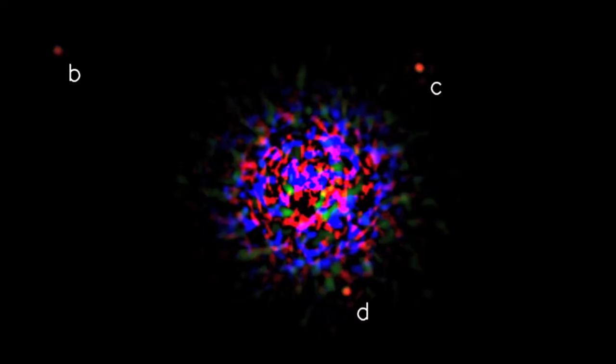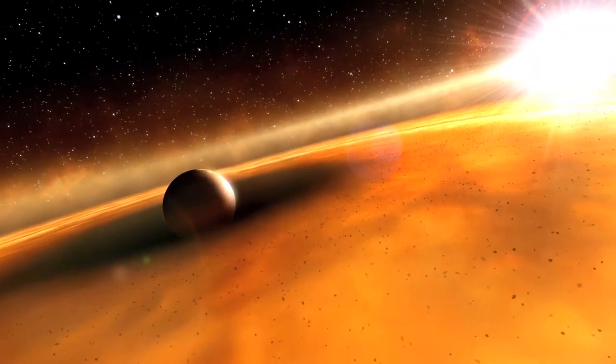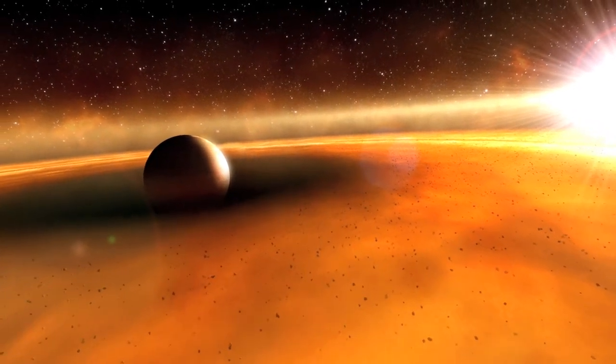A few other exoplanets have been imaged, but they are all located farther away from their host star than Beta Pictoris b is. If located in the Solar System, they would lie close to or beyond the orbit of the farthest planet Neptune. The formation processes of these distant planets are likely to be quite different from those in our Solar System and in Beta Pictoris.